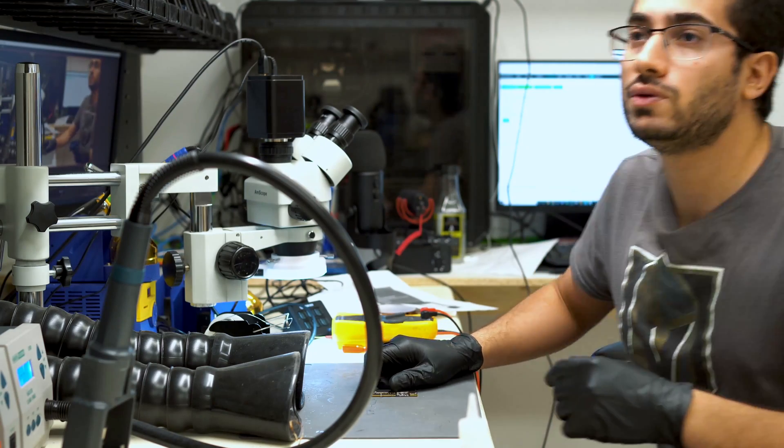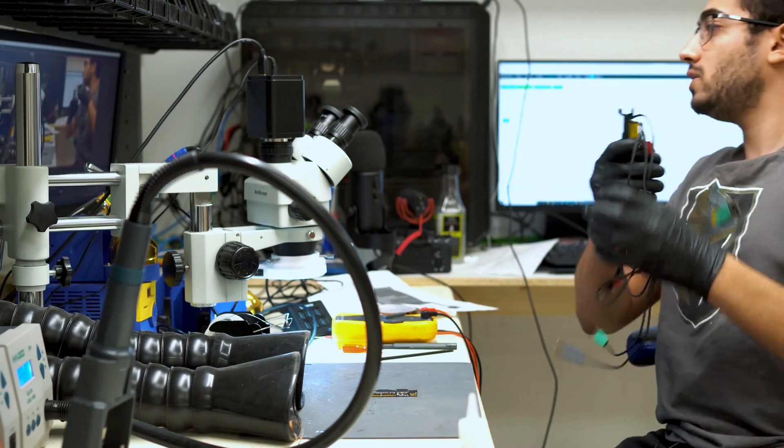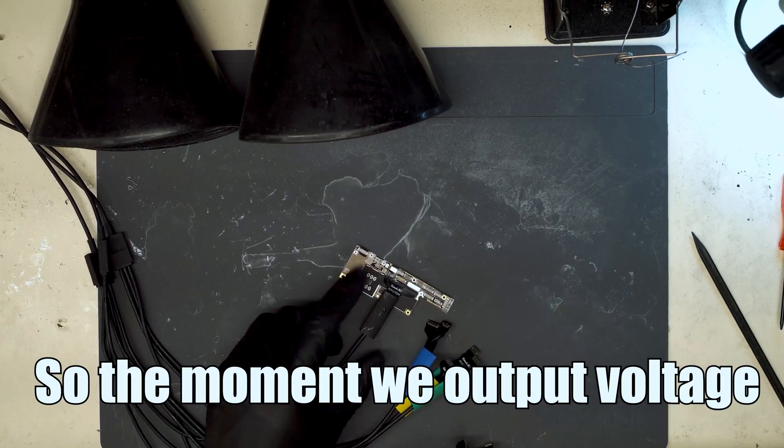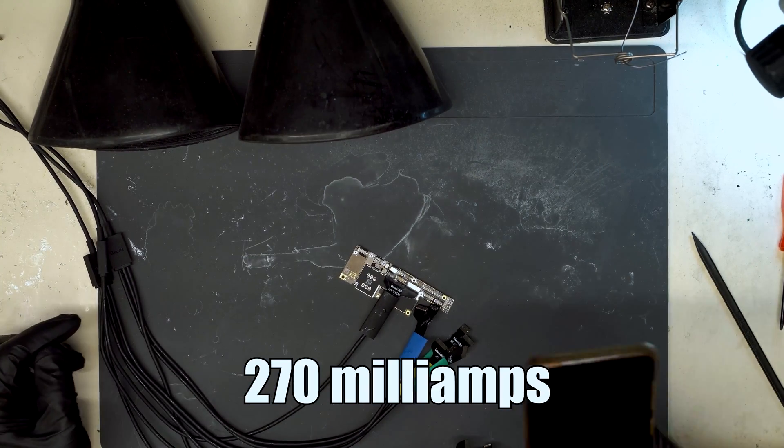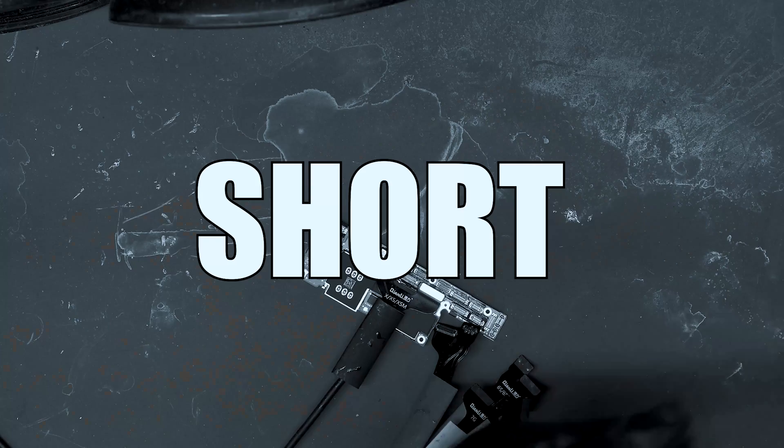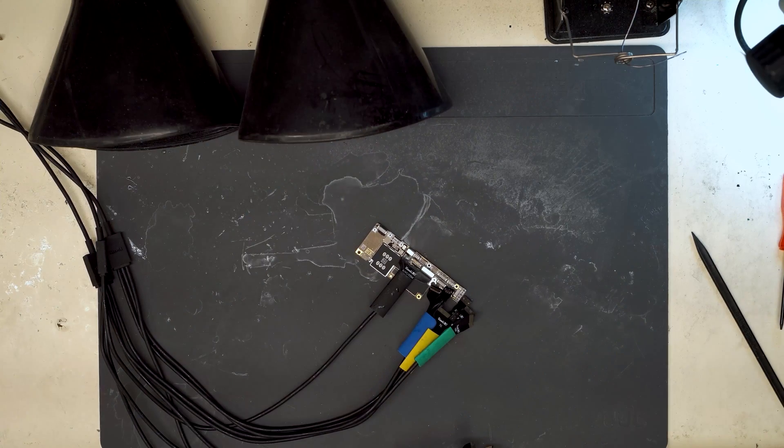Start by hooking this phone up to DC power and seeing what kind of amperage it is drawing. So the moment we output voltage we're getting 270mA, so that means there is a short somewhere on the board.